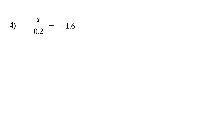Here, x is being divided by 0.2. So to get x by itself, we multiply both sides by 0.2. On the left, these cancel out, leaving x. What is negative 1.6 times 0.2? That gives us negative 0.32.